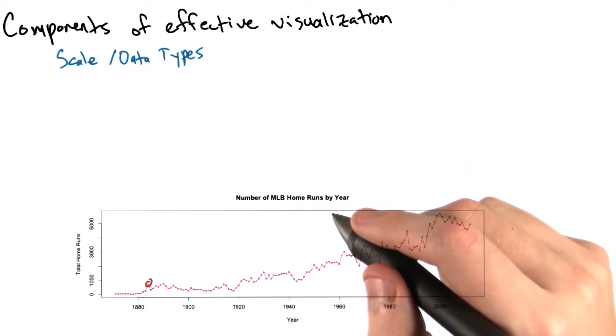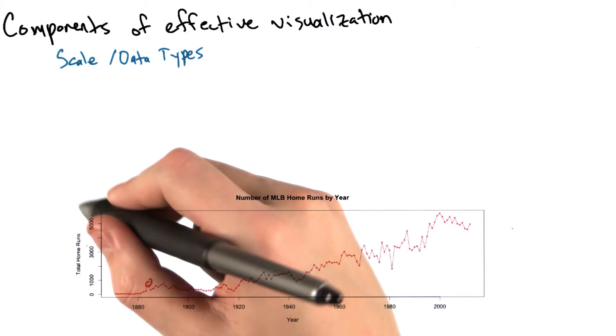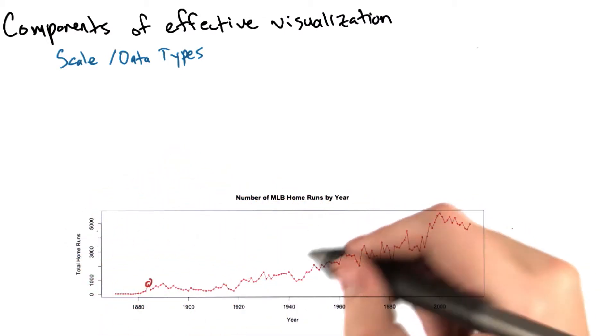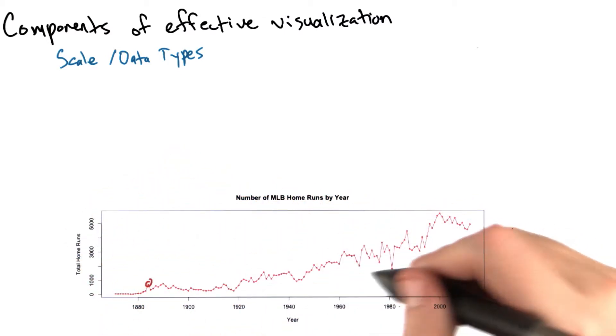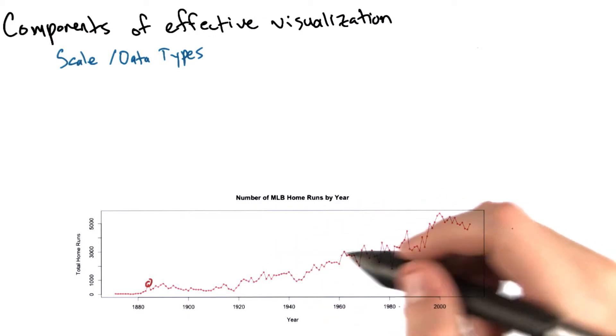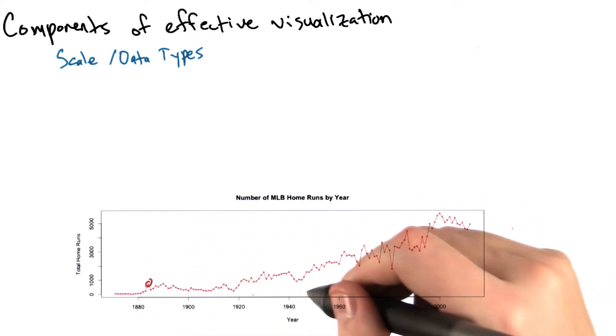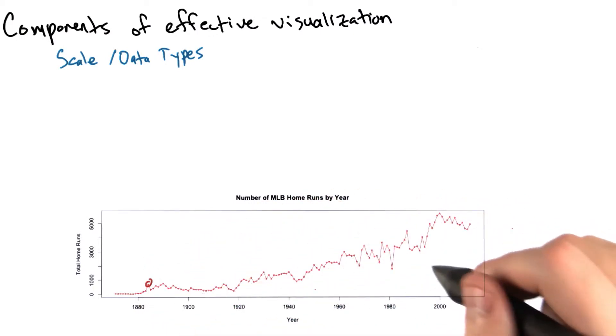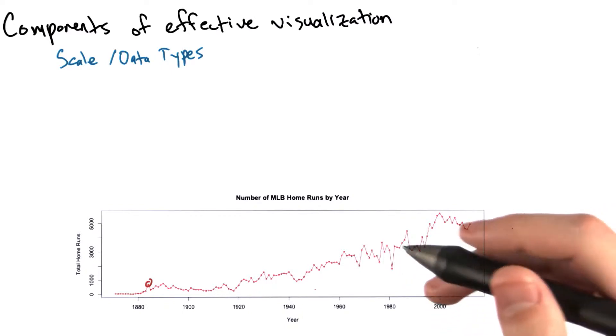In this example, we're using numerical data on the y-axis—the total number of home runs—and we have time on the x-axis, the year. Note that both of them are a linear scale, so numbers are evenly spaced out. There are other types of scales, which we'll discuss later.